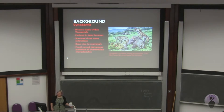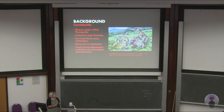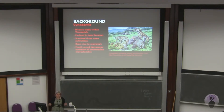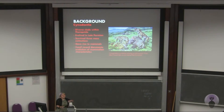So cynodonts are therapsids, and they evolved in the late Permian about 260 million years ago. They have survived three mass extinctions: the end-Permian, the late Triassic, and the Cretaceous-Paleogene extinction. As I said they gave rise to mammals, so they document this interesting transition from an exothermic condition to an endothermic condition — you can actually see that in fossils — especially because a lot of these important transitions, like the evolution of jaws or limbs, we don't have as perfect a record as we do for this change.